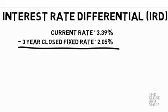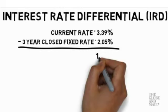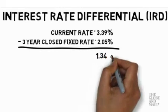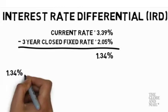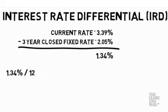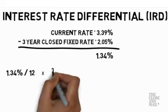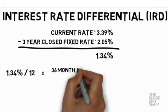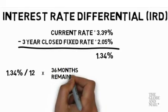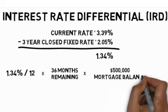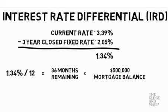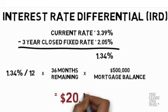Subtract this amount from your current interest rate to get 1.34%. Now take this differential and divide by 12, then multiply by the number of months remaining, which is 36, and then multiply by the $500,000 mortgage balance remaining. That equals $20,100.